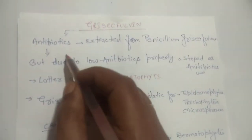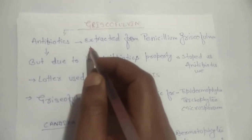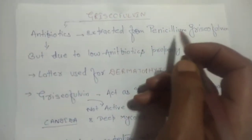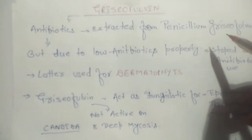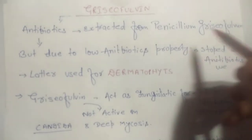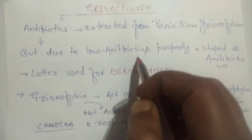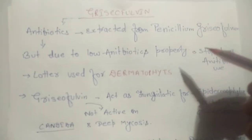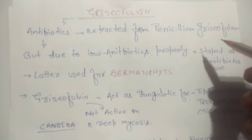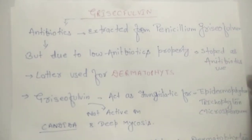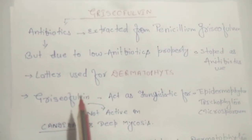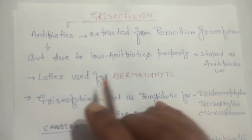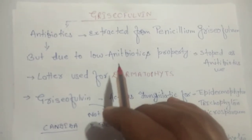Griseofulvin was initially started as an antibiotic. It was extracted from Penicillium griseofulvum. But due to its low antibiotic property, it was stopped as an antibiotic. Because the antibiotic property of griseofulvin is very, very low, and at that time the penicillin group of antibiotics was the most effective drug. So, due to its low antibiotic property, griseofulvin as an antibiotic was stopped.